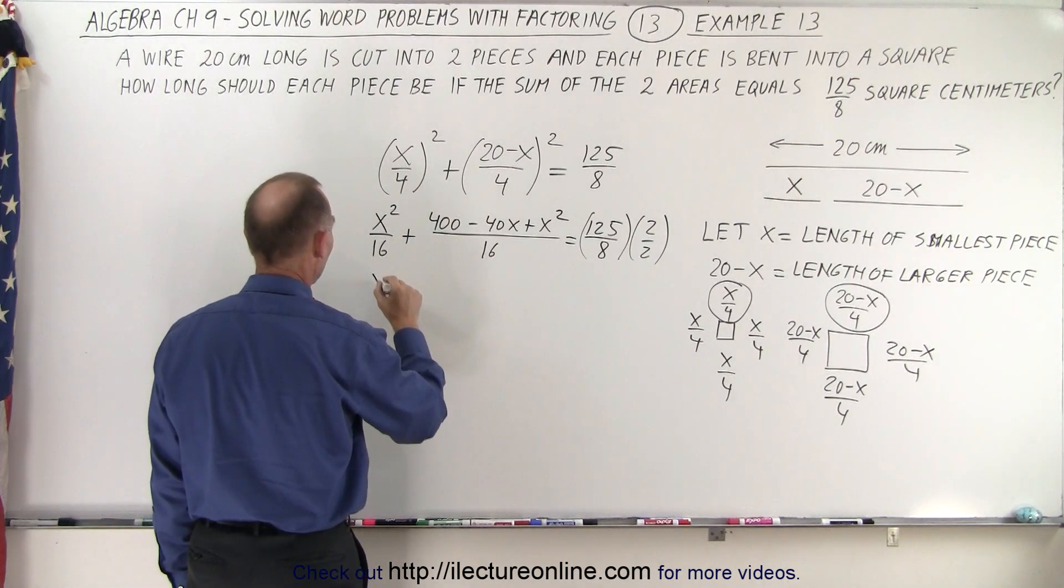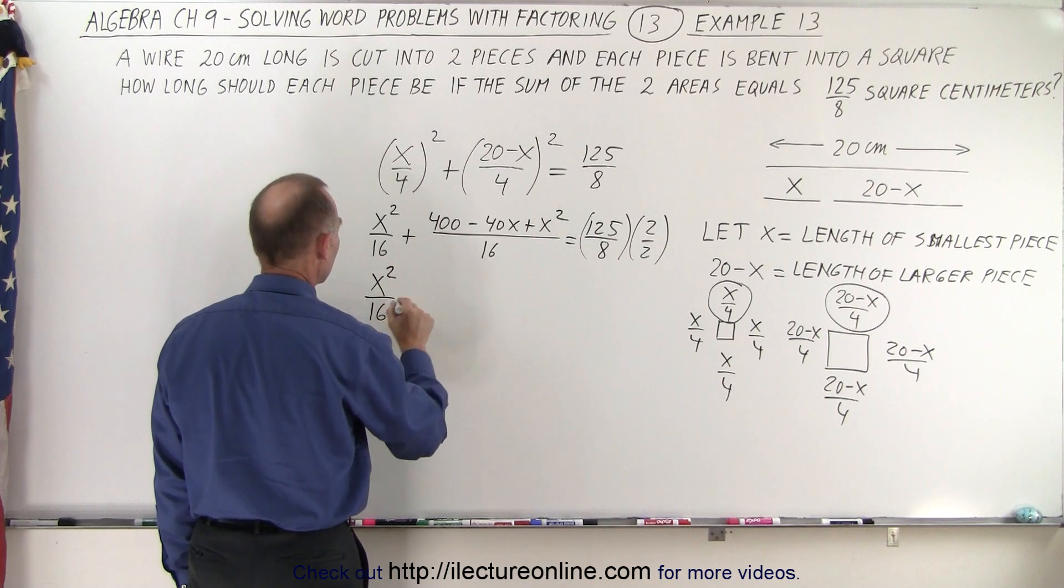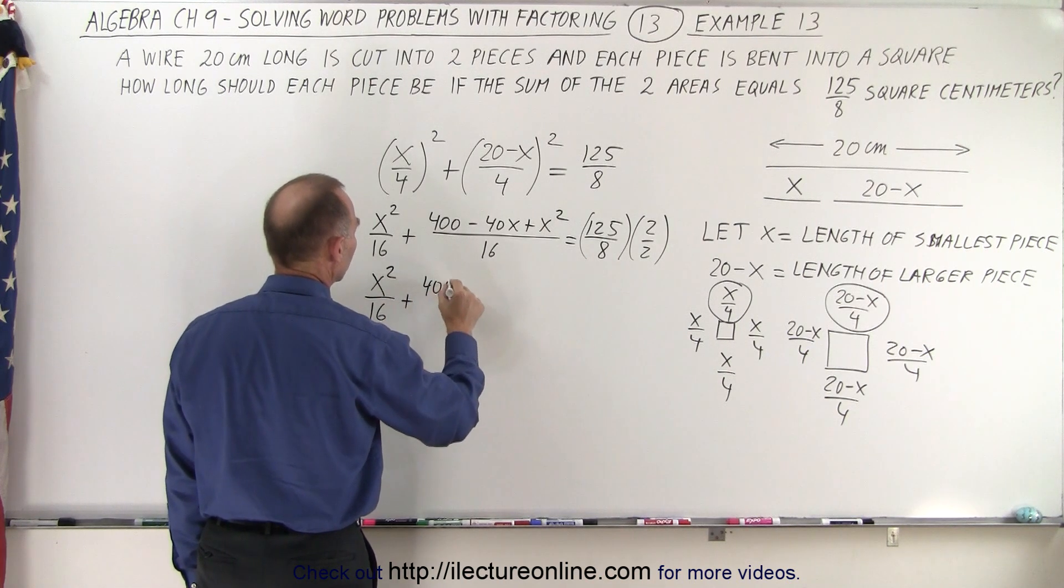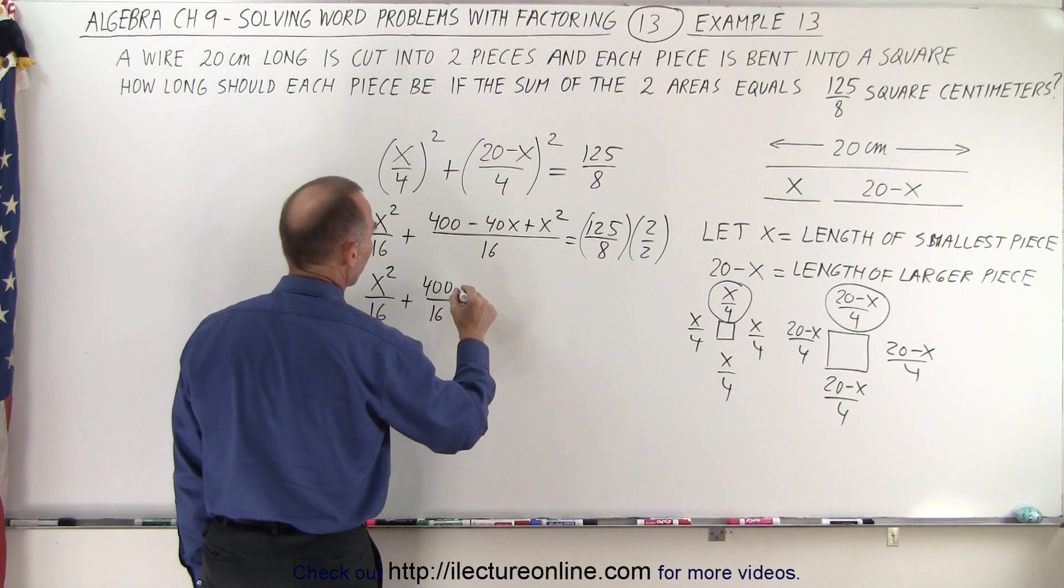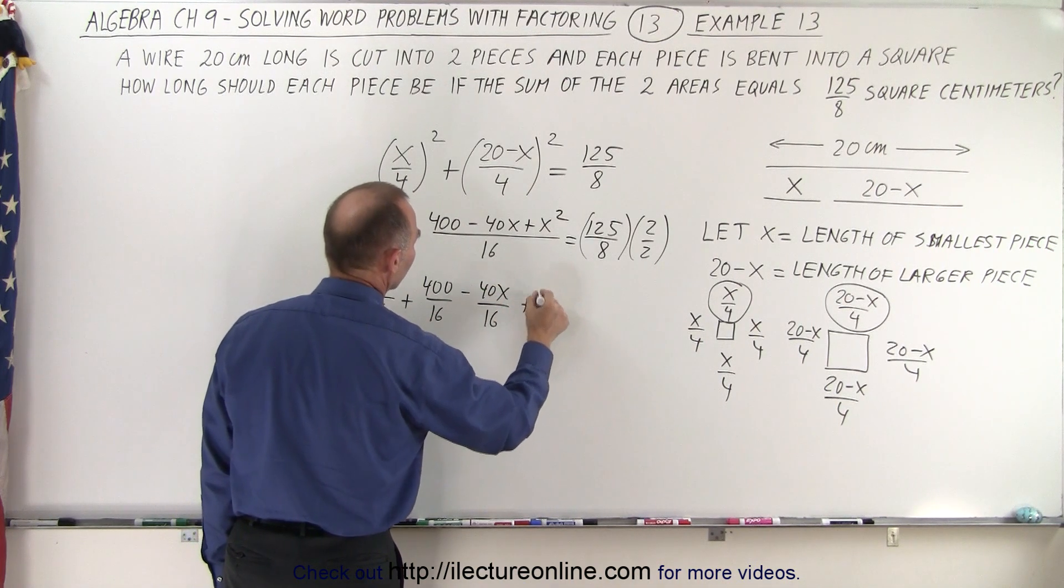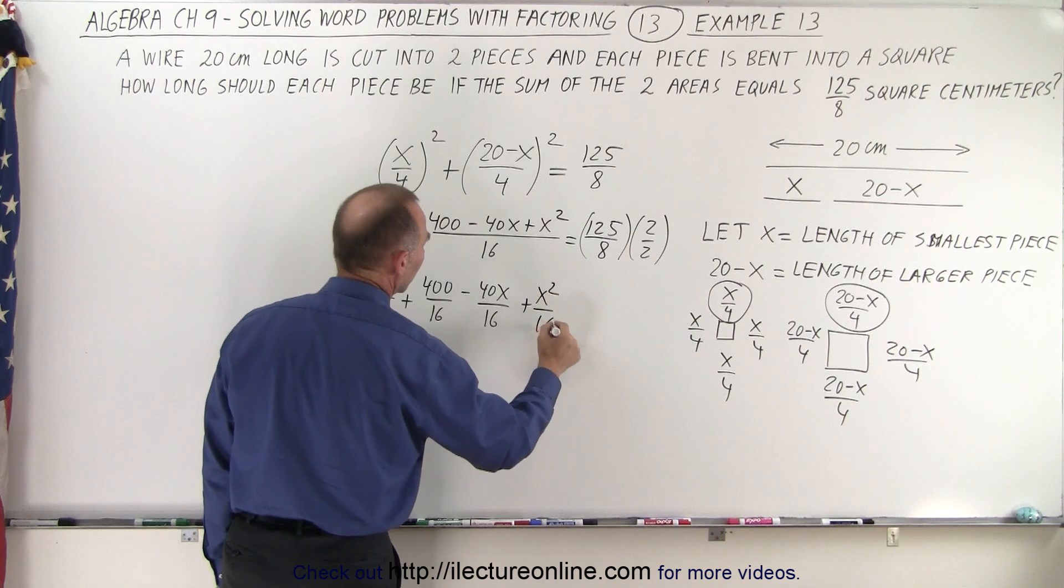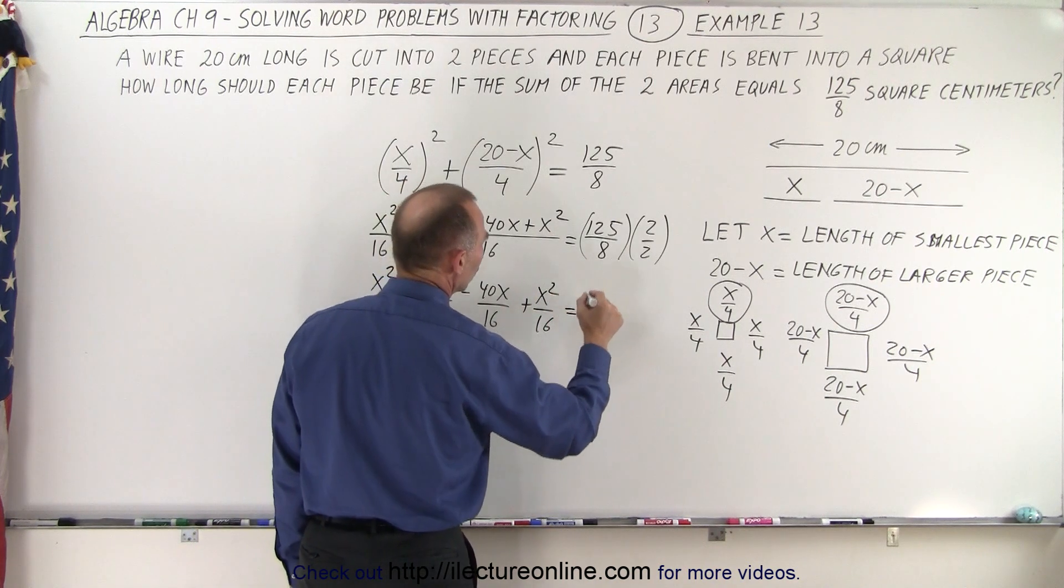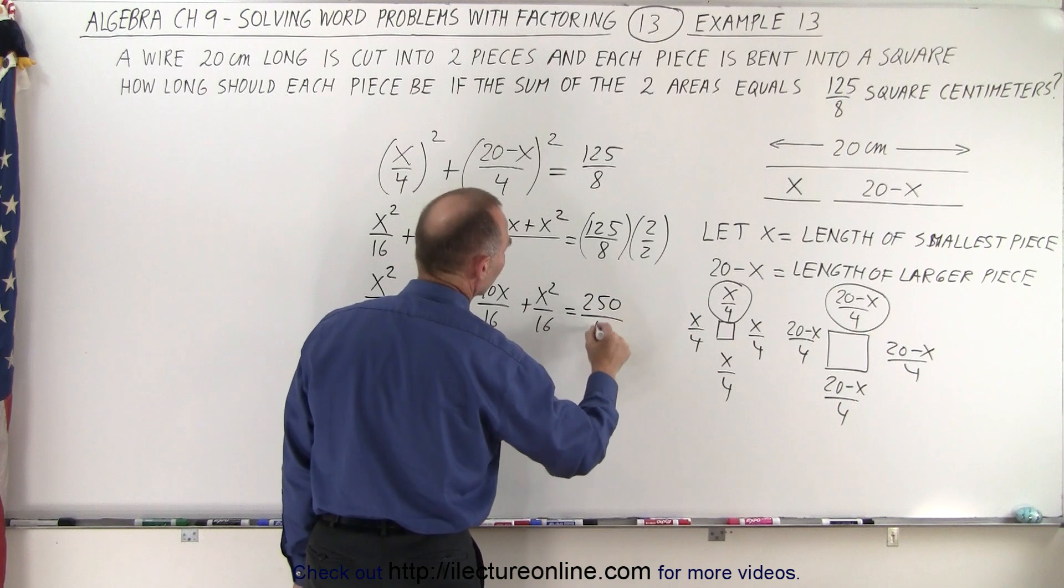Now this can be written as x squared over 16 plus 400 over 16 minus 40x over 16 plus x squared over 16. And that is equal to 250 over 16.